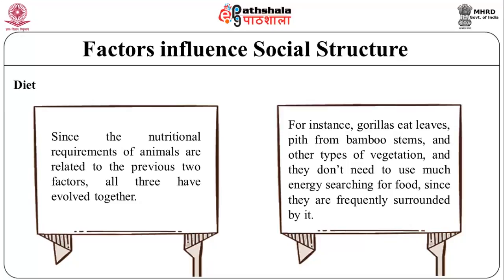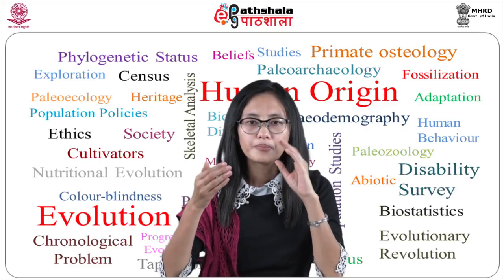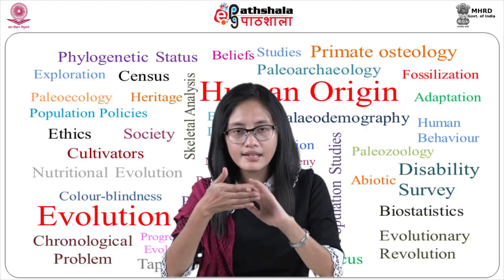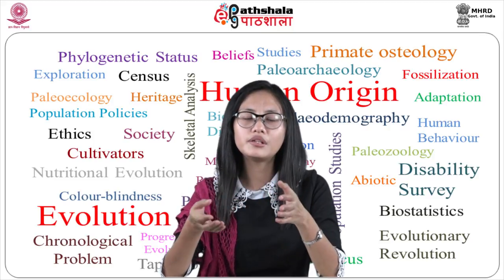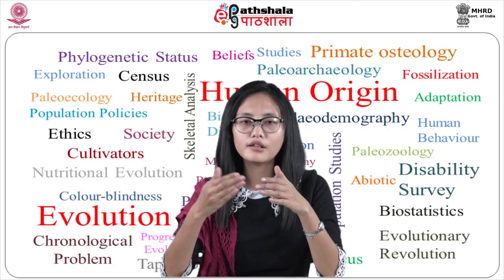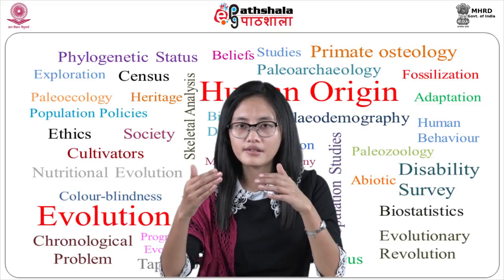While small-bodied primates focus on high-energy foods, larger ones don't necessarily need to. For instance, gorillas eat leaves, weeds from bamboo stems, and other types of vegetation, and they don't need to use much energy searching for food since they are frequently surrounded by it. The third factor is predation. Primates, depending on their size, are vulnerable to many types of predators, including snakes, birds of prey, leopards, wild dogs, lions, and even other primates.